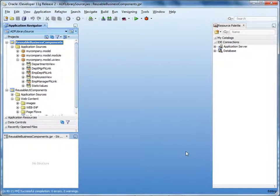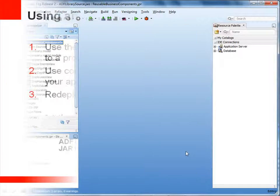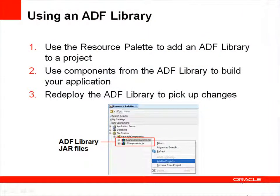Now you know how to create an ADF library. Next, let's learn how to use resources from the library. The easiest way to use an ADF library is by adding the library resources to a project. To do this, in the resource palette, you connect to the repository where the ADF library is stored — in this example, a file system. Then you simply add the library to the current project and all components in the library become available for use. If a component in the library changes, you simply redeploy the library.